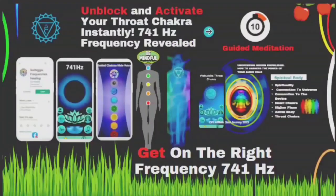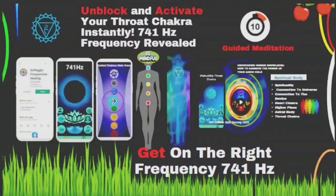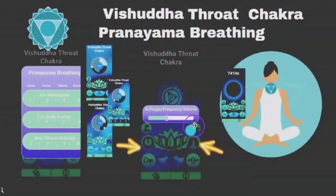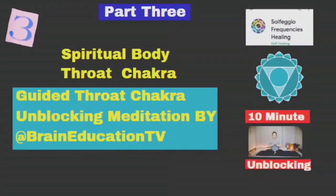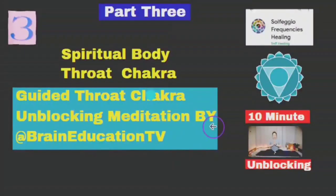Part three — we need to get on the right frequency to help open and unblock your throat chakra. This is 741 hertz frequency, which you will find in the Sophosho frequencies app and also when you look in the chakras power pack — the fifth icon up is the throat chakra. Once you have opened this up, you can turn the frequency down so that you hear the guided meditation. Thank you for all your subscribes, your shares, and your likes. I would not be able to get this message out without you. Part three is a guided throat chakra unblocking meditation by the Brain Education TV. Enjoy the meditation.